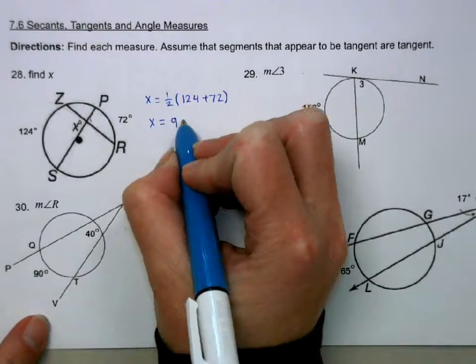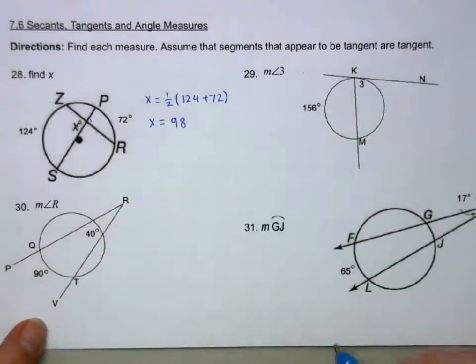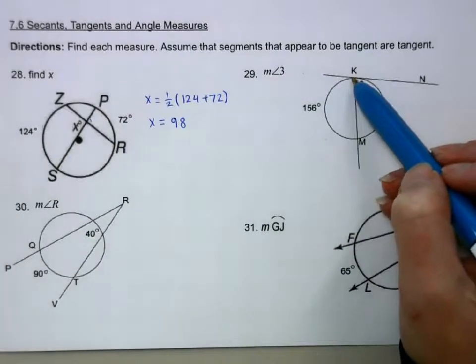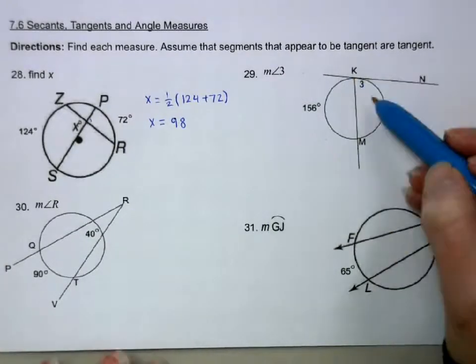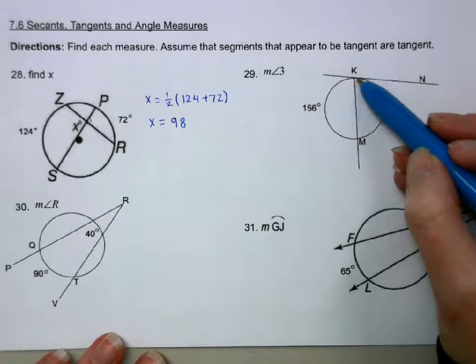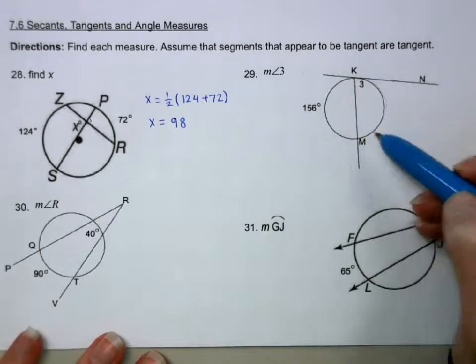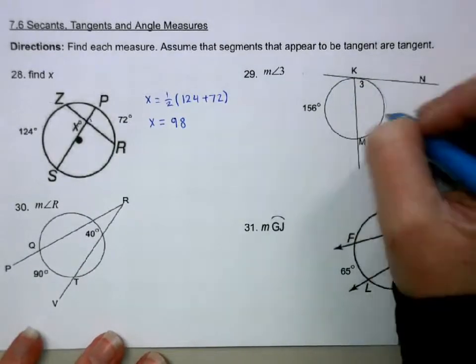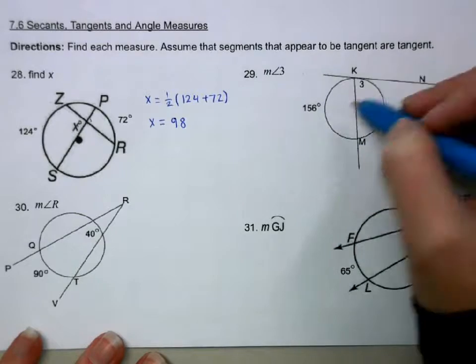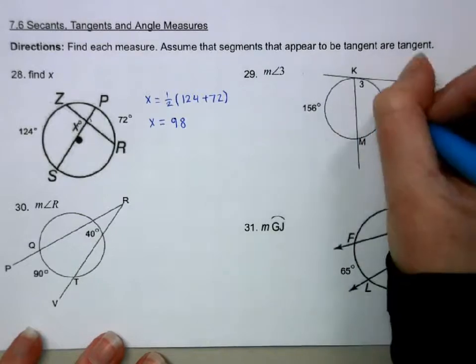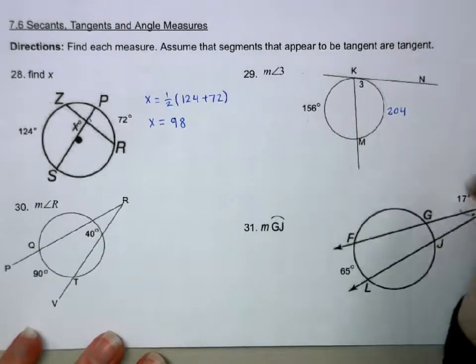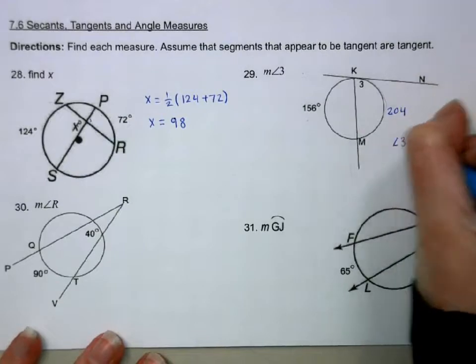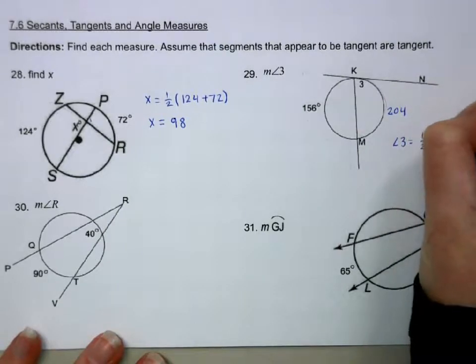Okay, so that's if they meet on the inside. If they meet on the edge, this is going to be like an inscribed angle where it's on the edge. So this angle is going to be half of the arc it intercepts. So I need to find this one. So 360 minus 156 is 204, which means angle 3 is half of 204, which is 102.